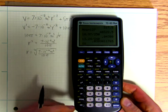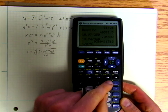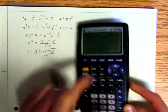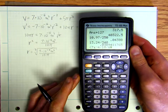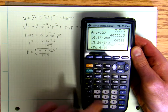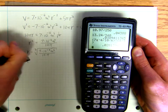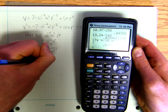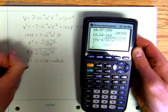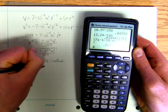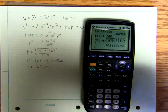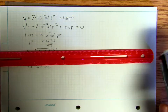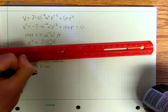Going to the calculator: parenthesis 7e negative 4, divided by 10, divided by pi, then to the 1 divided by 3. I get r equals 0.0281 meters, so r is going to be equal to 2.8 centimeters. That means the perfect diameter should be around 5.6 centimeters.